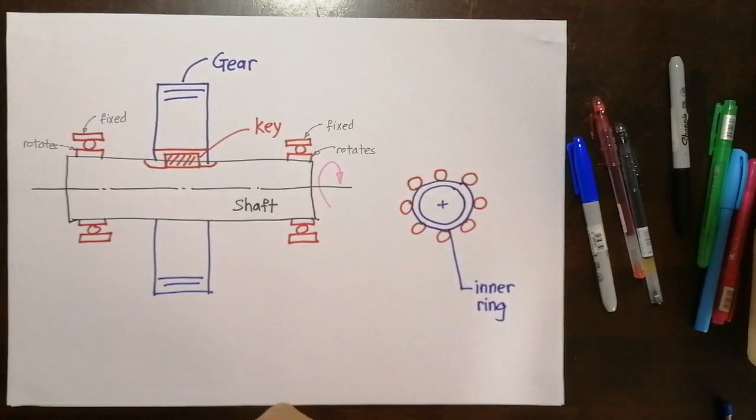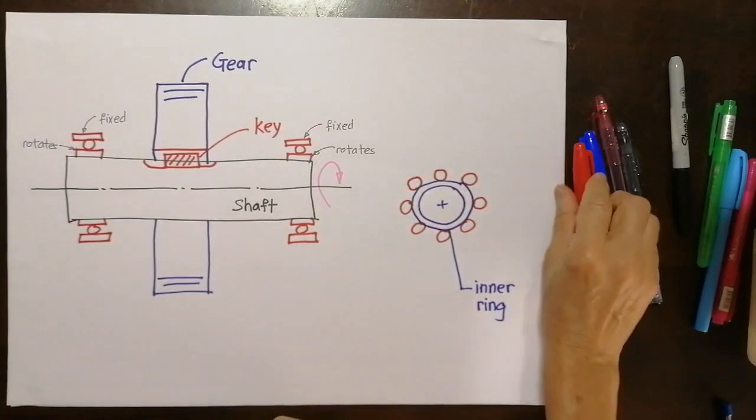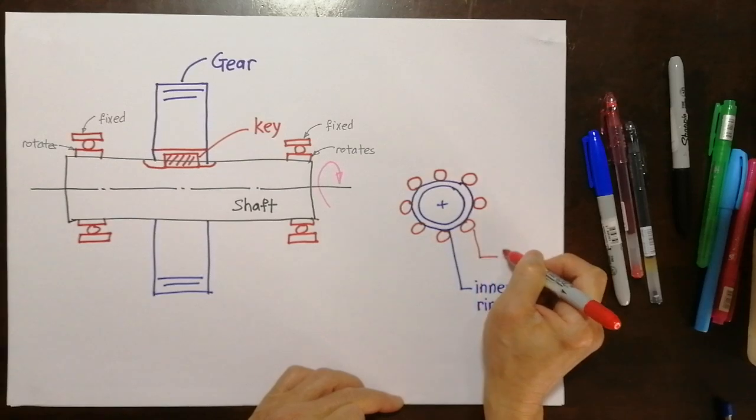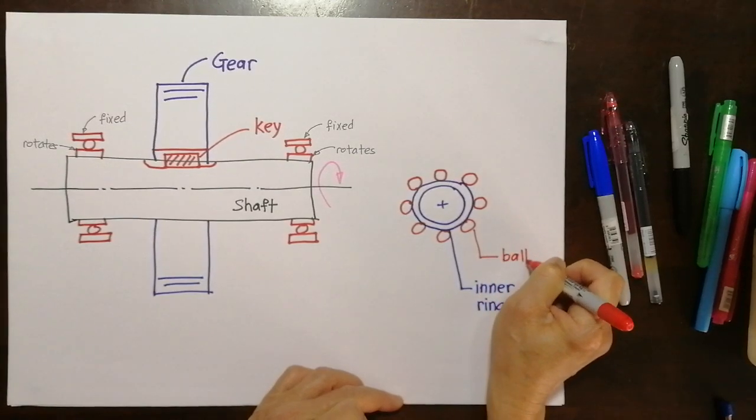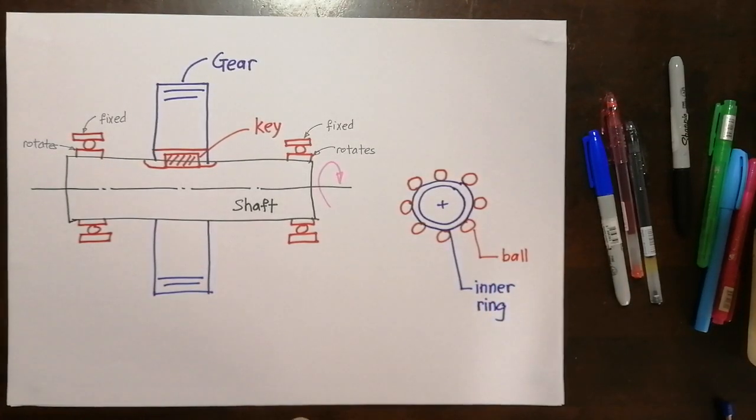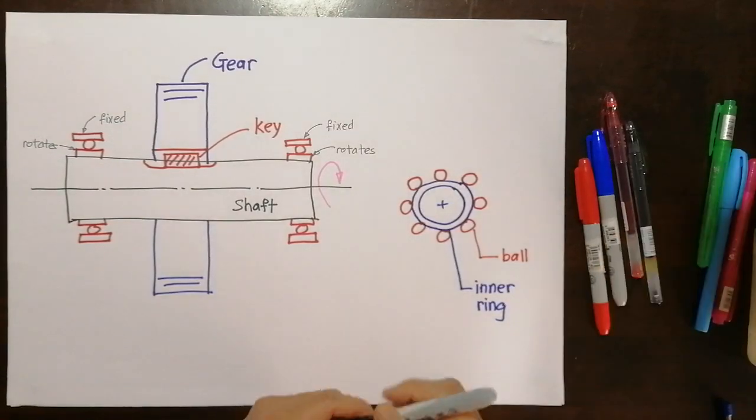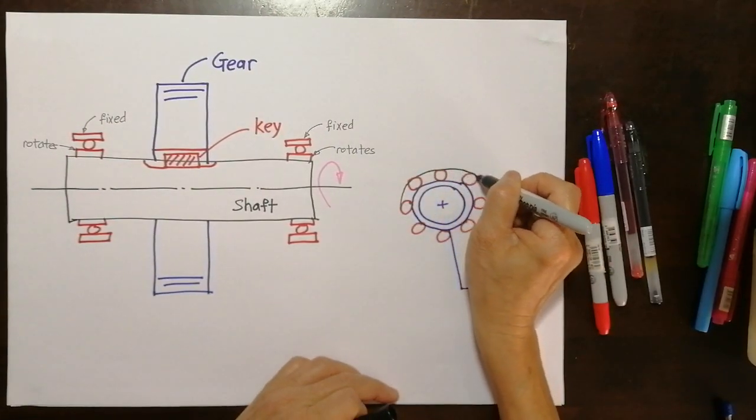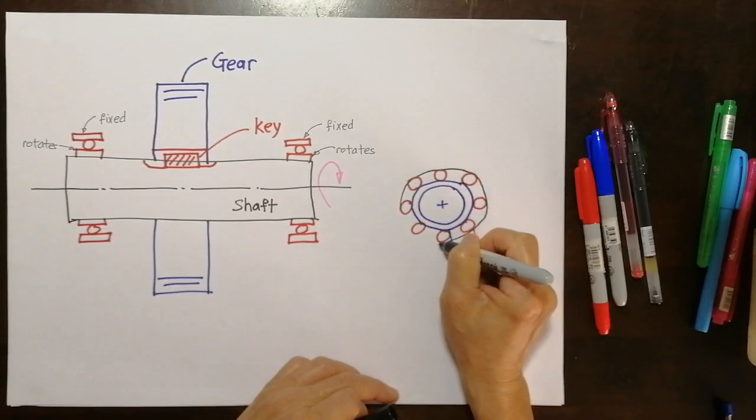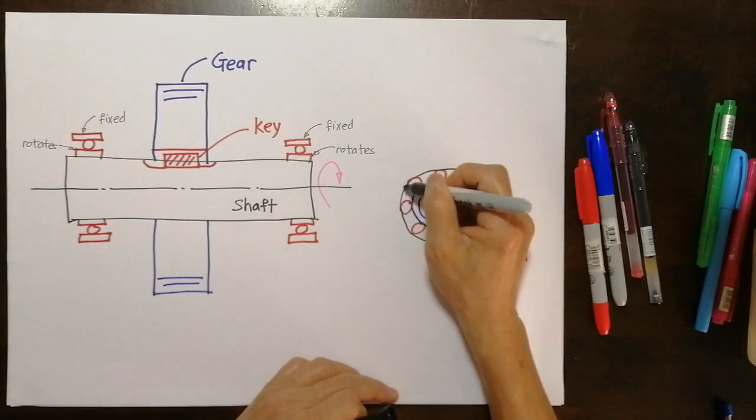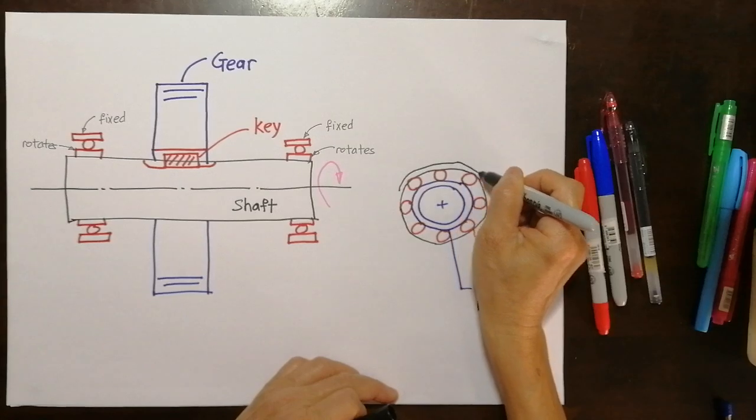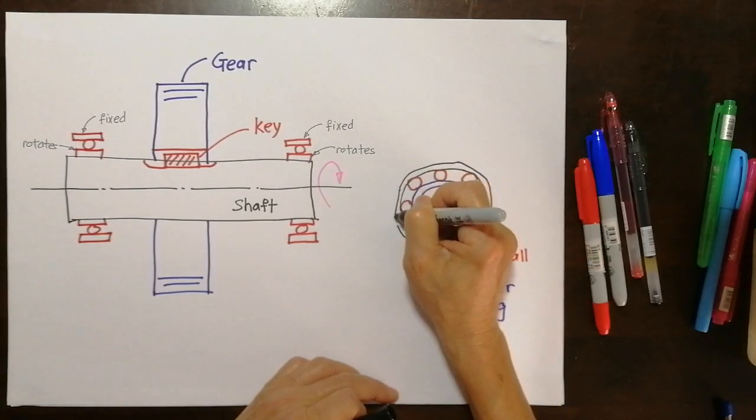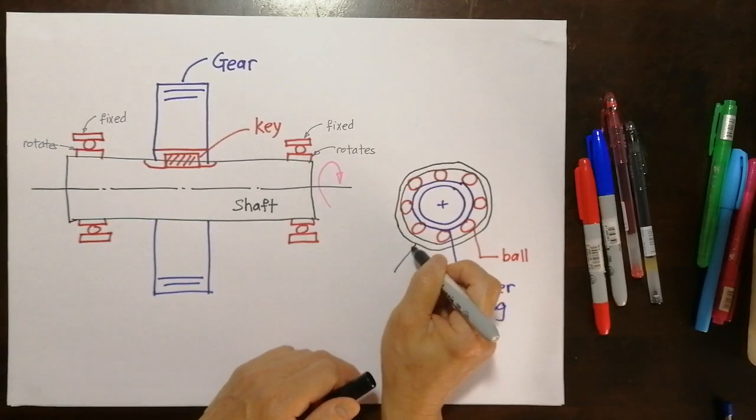And on the outer other ring. Oh, let me call it. This is called the ball. It's spherical in shape. Then let me just put in the one more path. This is quality.